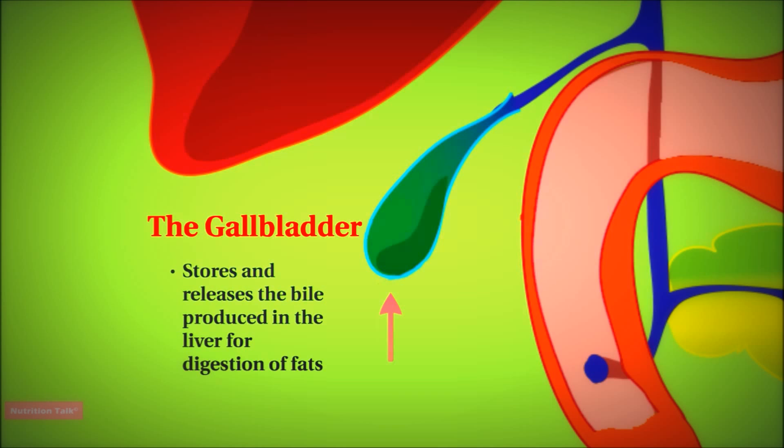And we will discuss how to prevent such problems from happening in some of the later lessons. Now when the food leaves the stomach, it goes through a valve into the small intestine. So the small intestine is actually the center point of the whole digestive process. And this is because 90% of the nutrients that come with the food become absorbed in the small intestine.